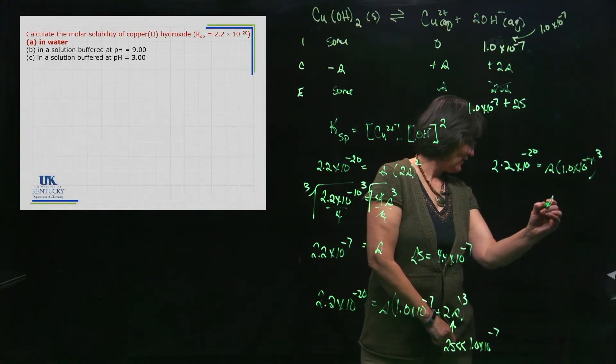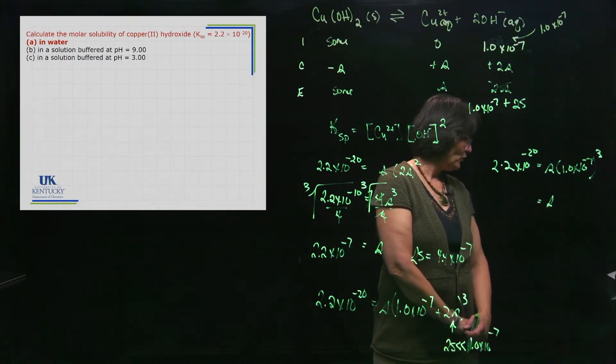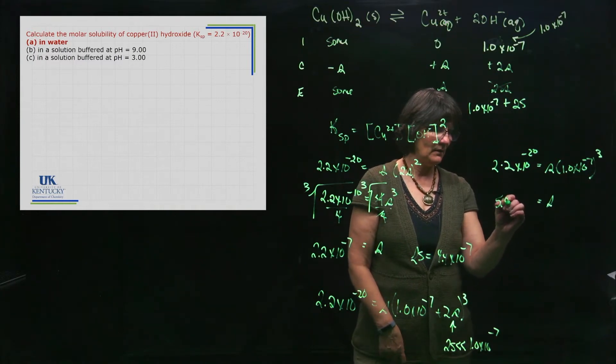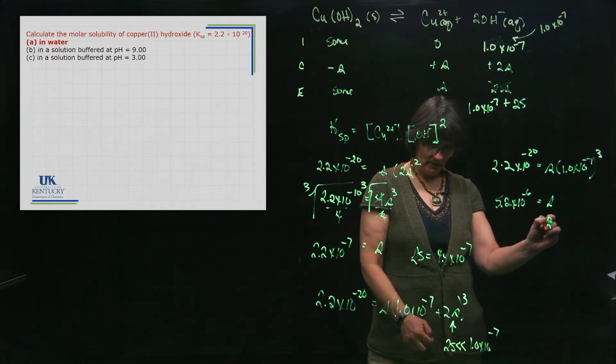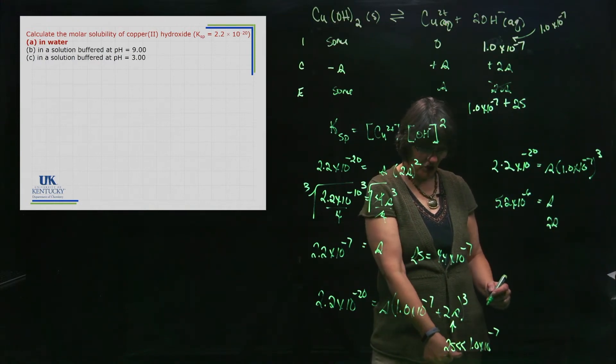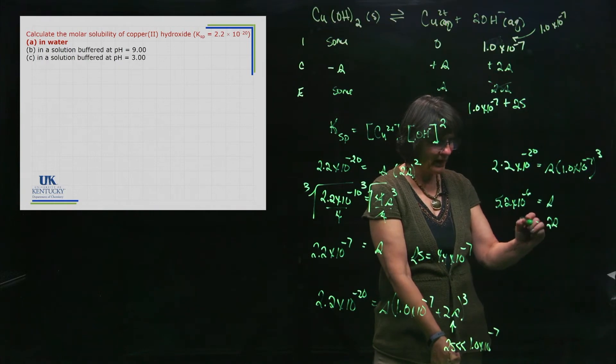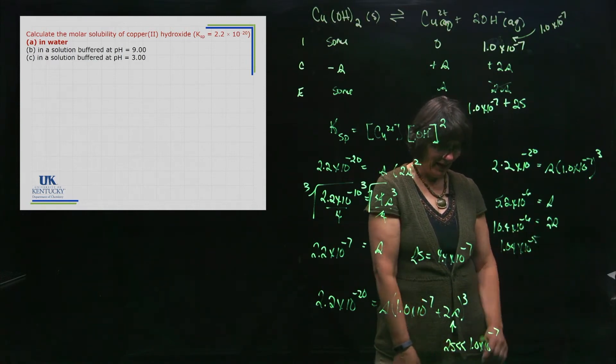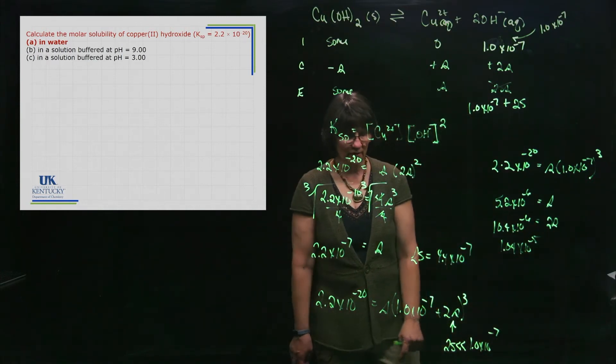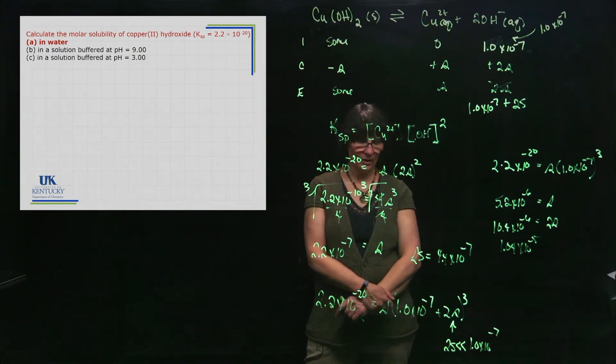When you come up with the s value, you end up with an s value of 5.2 times 10 to the minus 6. That's what s is. So 2s, our assumption was that 2s was much much smaller so I could ignore it. 2s is 10.4 times 10 to the minus 6, or 1.04 times 10 to the minus 5. Well, that ain't smaller than it at all. That was a terrible assumption.